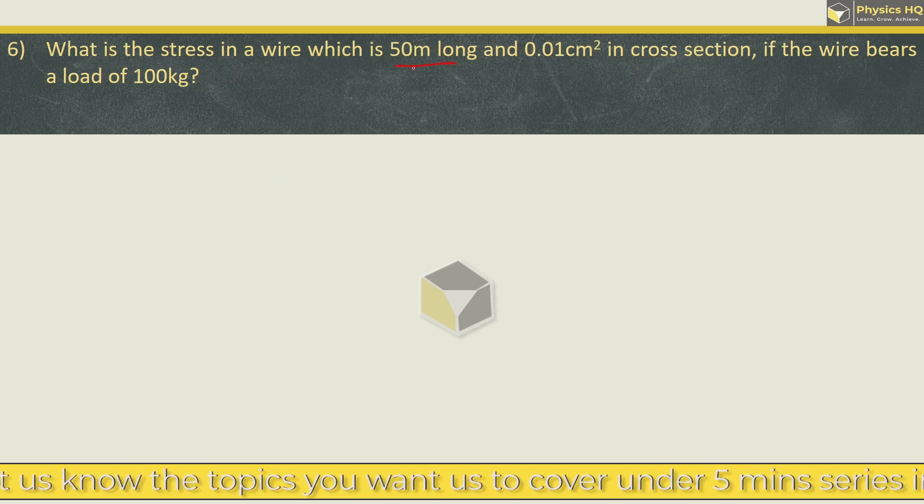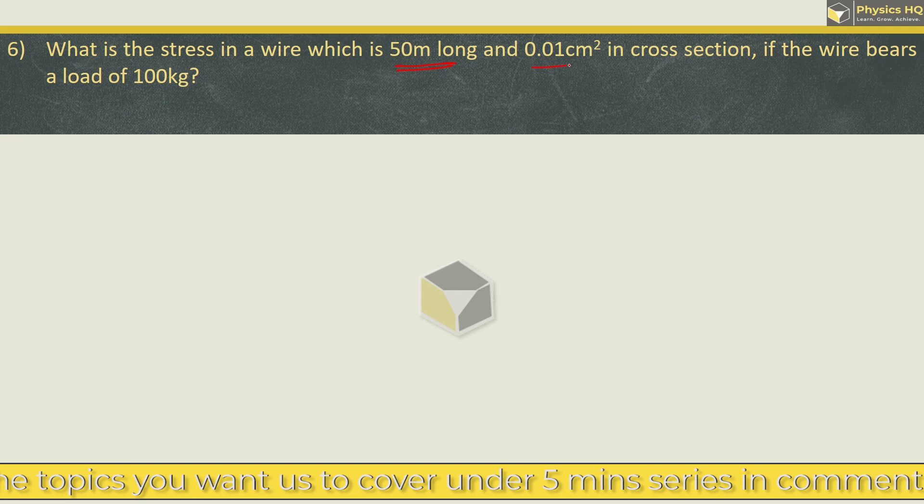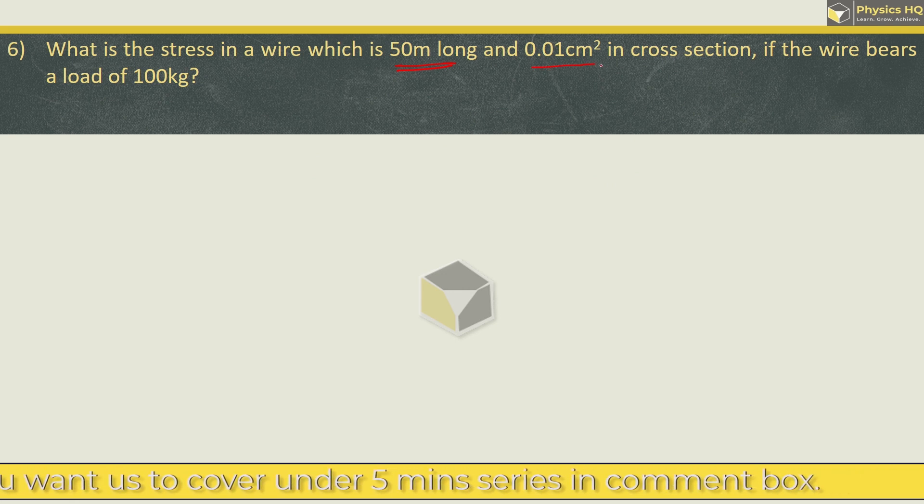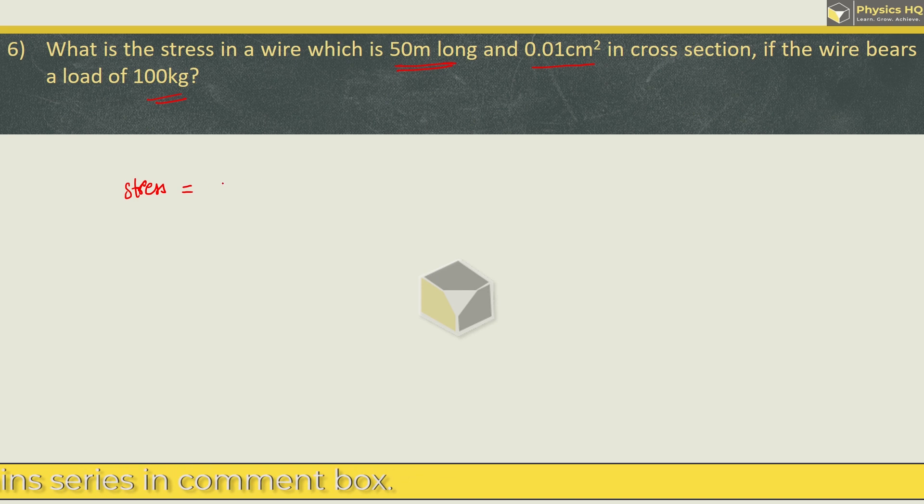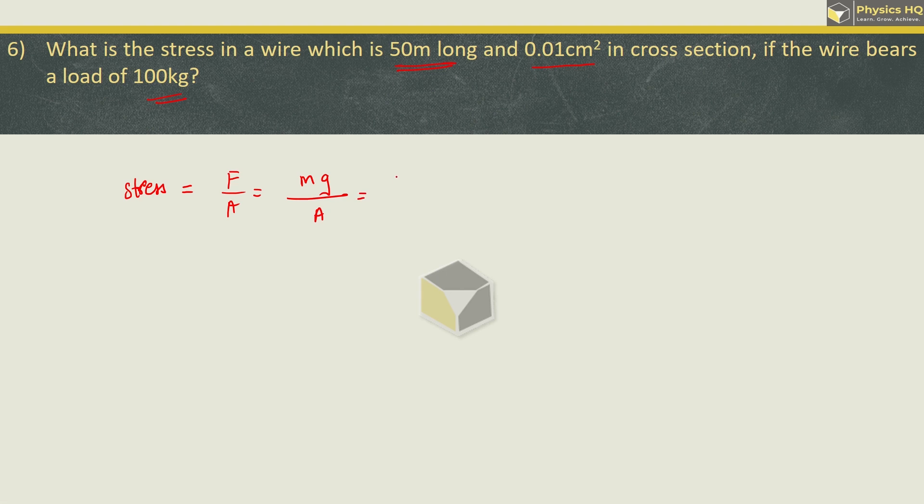What is the stress in the wire when a 50 meter long and 0.01 cm² in cross section if the wire bears a load of 100 kg? Stress is force / area. Force is the weight attached. Weight is mass 100 × g value 9.8, divided by area 0.01 cm². Centimeter to meter is 10^-2, squared is 10^-4.